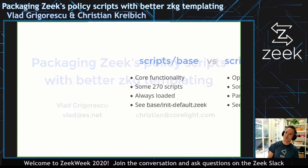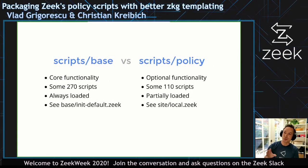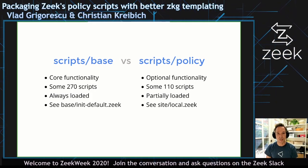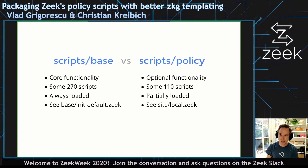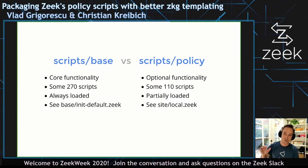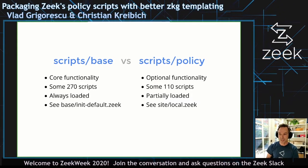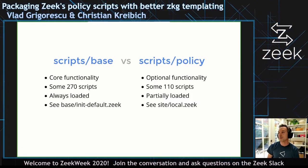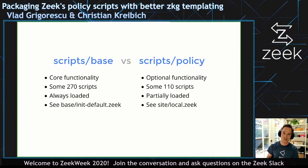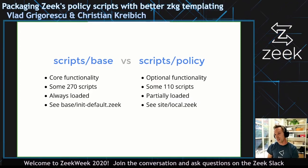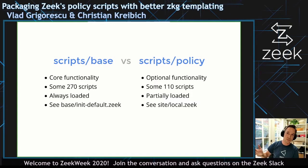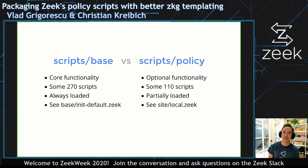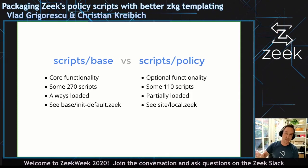For a bit of background, if you're familiar with the Zeek distribution, you probably know there are two big directories where we store policy scripts. The first is script space, which features the core functionality of Zeek — about 270 scripts, essentially always loaded unless you use bare mode, pulled in from a file called base in a default Zeek install, which is hardwired into the code base. The other big location is scripts/policy — about 110 files of optional functionality, partially loaded and governed by a file called site-local.zeek, which is essentially up to the maintainer in terms of content.